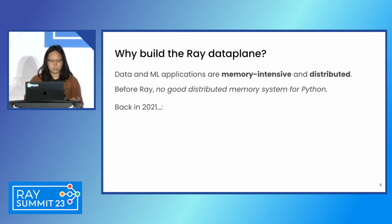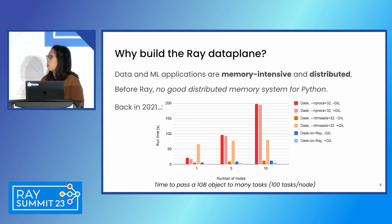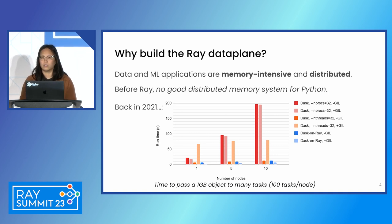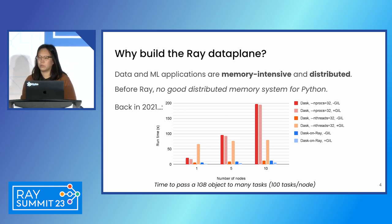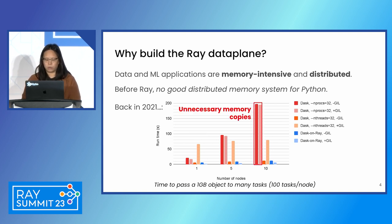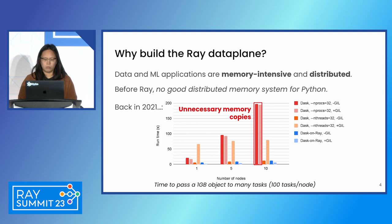To illustrate this, I'm pulling some results from a comparison that we did back in 2021. This was a microbenchmark comparing Dask to Ray — a very simple workload, just passing a large object between a bunch of different tasks and looking at scalability with number of nodes. This graph is measuring runtime, meaning lower is better. With Dask, some of the design choices in their distributed memory system led to poor performance.